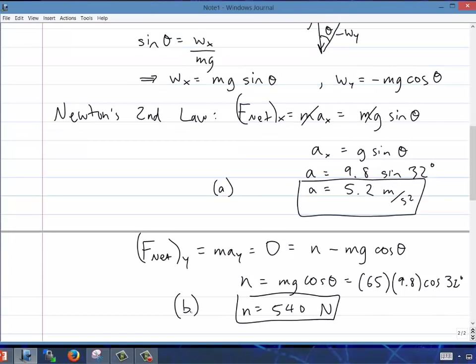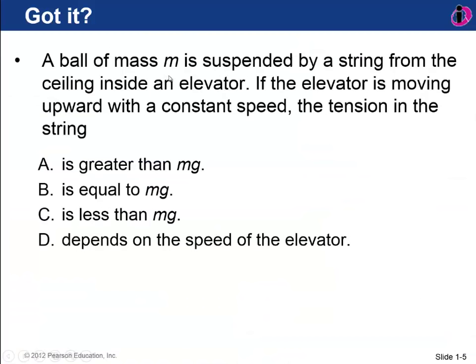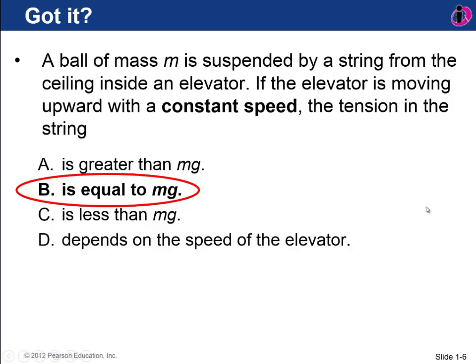Let's pause to check understanding. A ball of mass m is suspended by a string from the ceiling inside an elevator moving upward with constant speed. Is the tension greater than mg, equal to mg, less than mg, or does it depend on speed? The answer: the free body diagram shows tension up and mg down. Constant speed means acceleration is zero, so F_net in y equals zero, meaning tension equals mg.